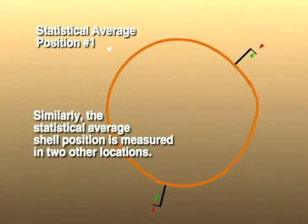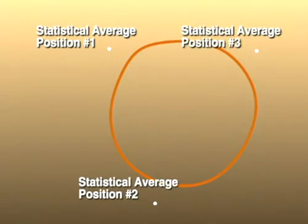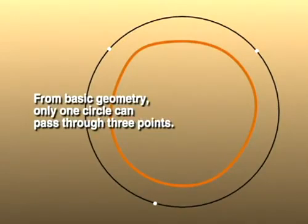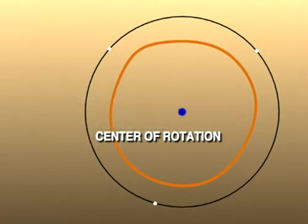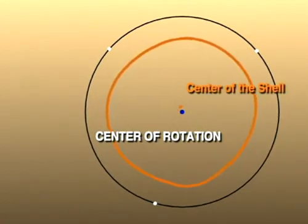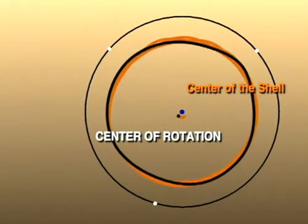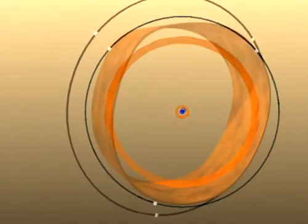Similarly, the statistical average shell position is measured in two other locations. From basic geometry, only one circle can pass through three points. When the circle is formed using the three average shell positions, its center defines the center of rotation of the shell itself. With the presence of planetary motion, the center of rotation will be different from the center of the shell. Kiln shells almost always have a measurable amount of planetary motion along their length, since they are never perfectly straight.